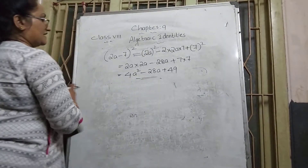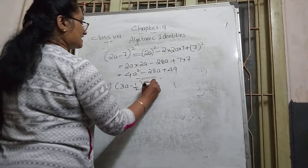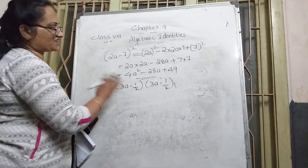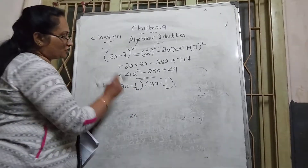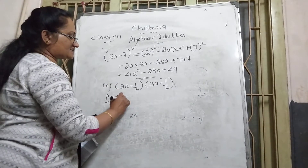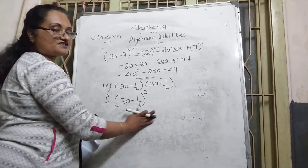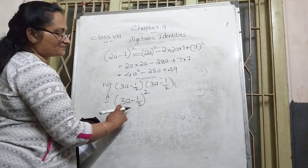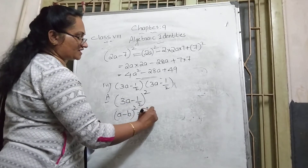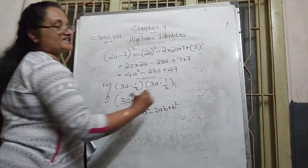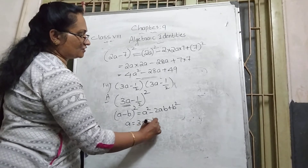The third question involves a fractional number: (3a − ½)(3a − ½). Two brackets, both same — this is the (a − b)² form. A value is 3a and B value is ½. The expansion form is a² − 2ab + b².